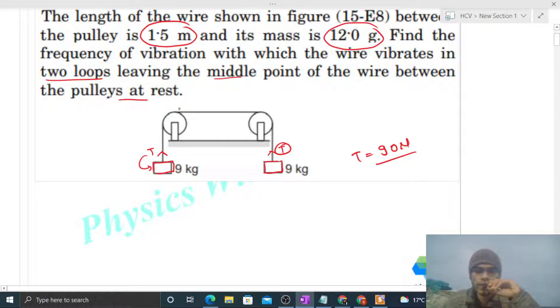What is given: the wire between the two pulleys has a mass of 12 grams and a length of 1.5 meters. So we can find the linear mass density μ, which is mass per unit length. Mass is 12 times 10 to the power minus 3 kilograms divided by length, which is 1.5 meters.